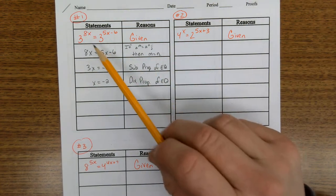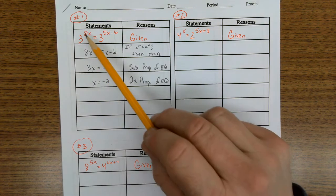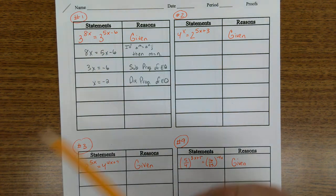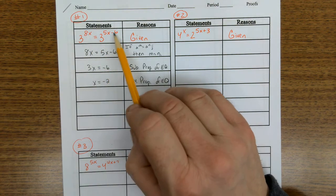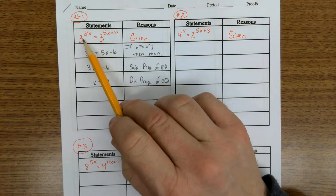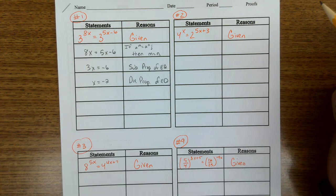We have it solved. We figured out what x is. You can plug that back in there and verify it's true. If you plug in negative 2 here, you get negative 16 on this side. Plug in negative 2 here, you get negative 16 on this side. Everything's equal.